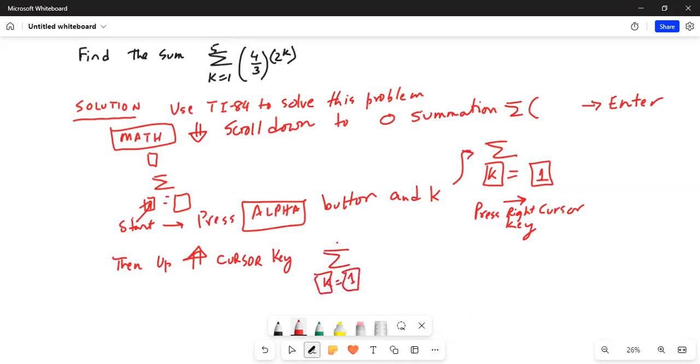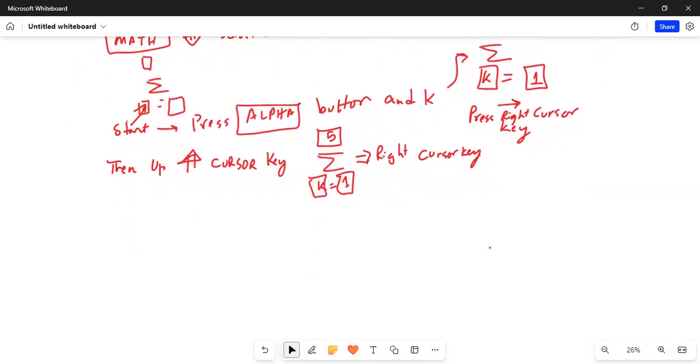Press right cursor key. Type 1 over here. Then the next step is up cursor key. So far we have k equal to 1. This block is k. This is 1 and now it is flashing over here. We have to put in over there 5 because we are summing from 1 to 5. Type in 5 over there.